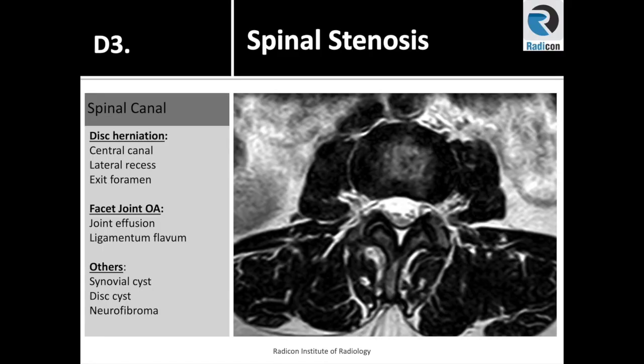The thecal sac is surrounded anteriorly by vertebral bodies and discs, while posteriorly by the posterior elements including facet joints. Narrowing of the central canal, or thecal sac, can be secondary to developmental or acquired causes.